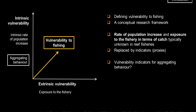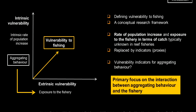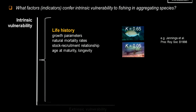I'm particularly interested in aggregating behavior. To date, there have been no attempts to define aggregating behavior in terms of indicators, to decompose it and see in what ways it confers vulnerability to fishing — particularly how it exposes a population to a fishery. We have to consider life history: a small rabbitfish and a giant grouper have vastly different growth parameters, so life history must be incorporated into any attempt to understand what makes these species vulnerable to fishing.